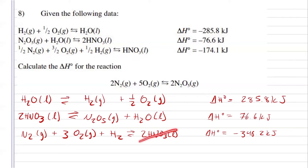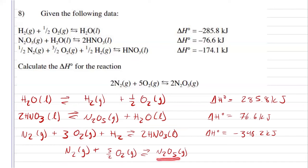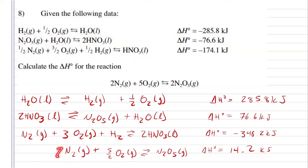Now, we can see what cancels. Two moles of nitric acid will cancel. The hydrogens will cancel. The waters will cancel. And then, I'm just going to subtract half a mole of oxygen gas from my three moles of oxygen gas here. So I end up with one mole of nitrogen gas plus five halves of a mole of oxygen gas is going to give me one mole of dinitrogen pentoxide. That enthalpy is going to be 14.2 kilojoules adding these three together. But again, that's not what the question is asking us for — we made half of what we needed. So I'm just going to multiply my enthalpy by two, giving me two moles of dinitrogen pentoxide with an enthalpy of 28.4 kilojoules.